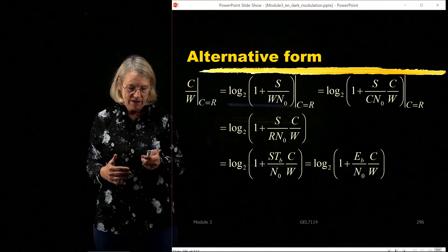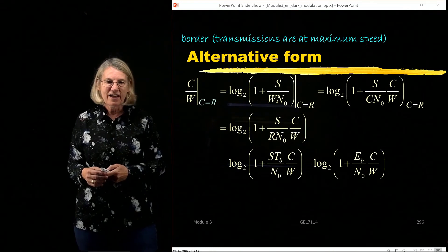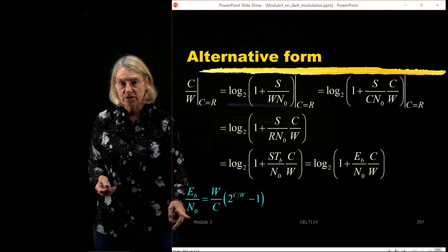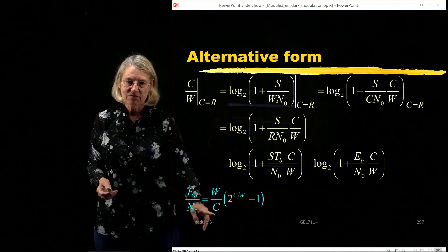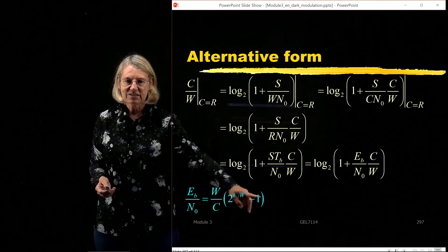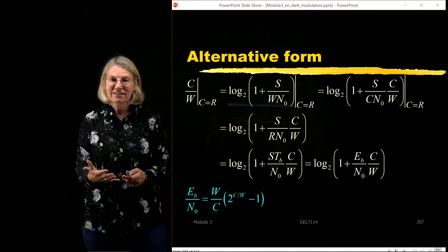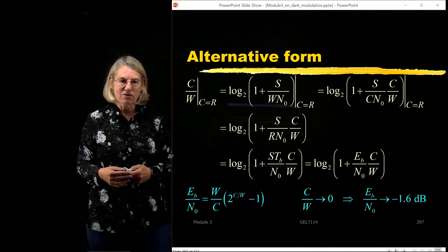So now I've got an equation where I have C over W and EB over N0. So now instead of having a signal-to-noise ratio, which was also a function of W, I have an EB over N0, which is completely independent of the bandwidth. So now it's straightforward. I just solve for EB over N0 first, and I get W over C, and then 2 to the C over W minus 1. So you can see I have a new equation that relates C over W and EB over N0.